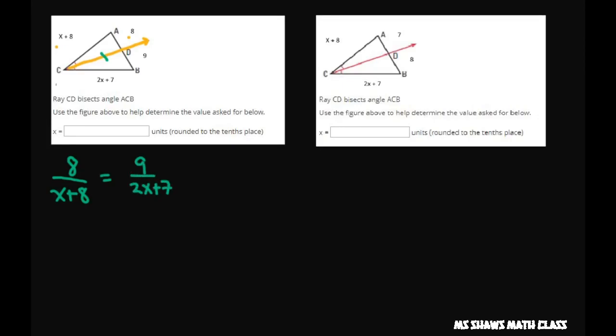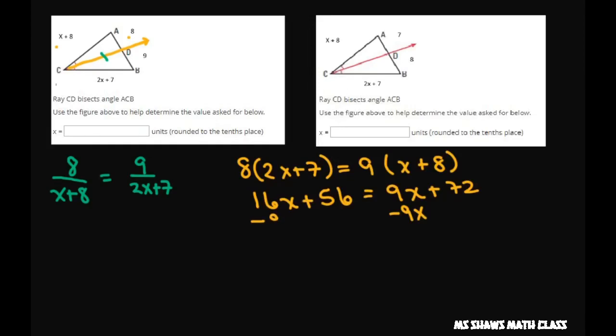You cross multiply and you're going to get 8 times 2x plus 7 equals 9 times x plus 8, so we get 16x plus 56 equals 9x plus 72. Now let's subtract 9x from both sides, subtract 56 from both sides, and that's going to give you 7x equals 72 minus 56 is 16.